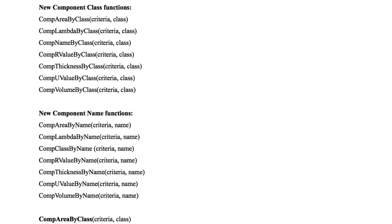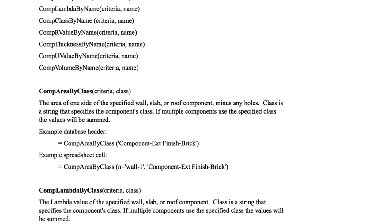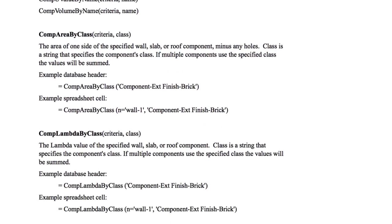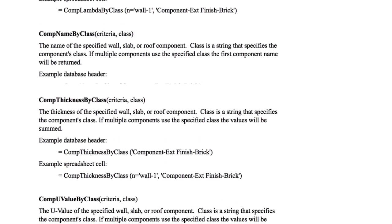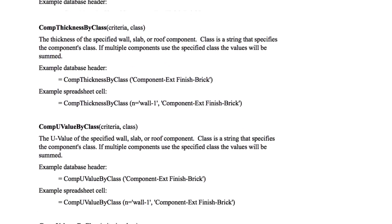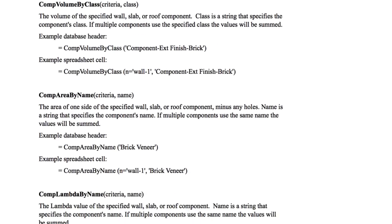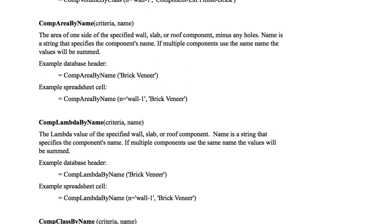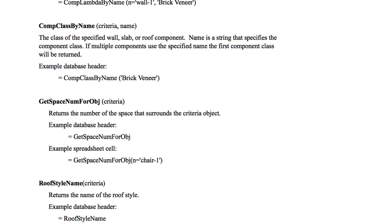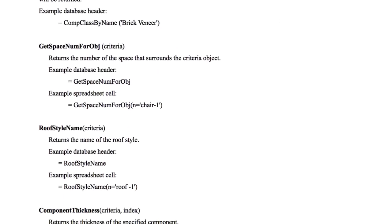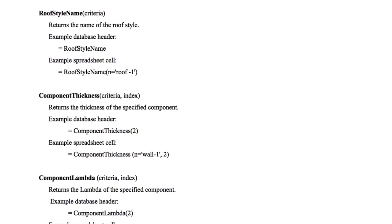In addition to those usage improvements, we've also increased BIM-relevant functions available within worksheets. Some of the additions are getting space names and numbers from a specified object, a plethora of values related to Energos, and a huge increase in the ability to pull component-specific information from objects such as walls, roofs, and slabs.